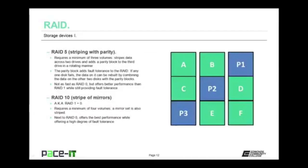In an effort to improve RAID performance, RAID 5 was developed — also called striping with parity. RAID 5 requires a minimum of three drives. In a RAID 5 setup with three volumes, it stripes data across two drives and adds a parity block to the third drive in a rotating manner. The parity block adds fault tolerance — if any one disk fails, the data can still be rebuilt by combining the data on the other two disks with the remaining parity blocks. RAID 5 is not as fast as RAID 0, but offers better performance than RAID 1 while still providing fault tolerance.